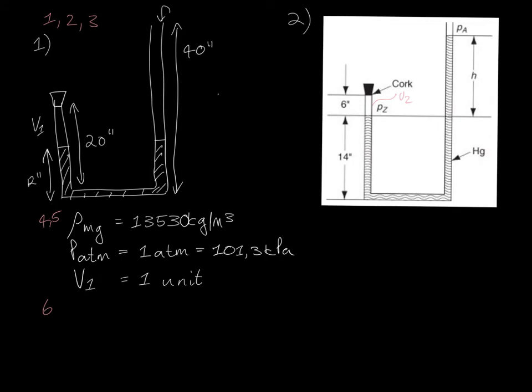Step six is determining the unknowns. We have three unknowns. We have V2, we have H and we have P2.